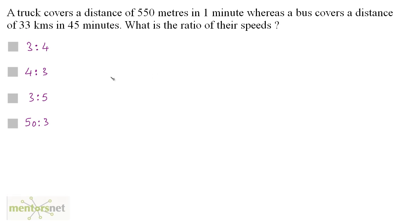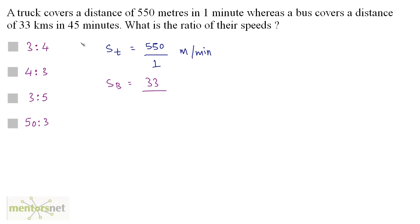A truck covers a distance of 550 meters in 1 minute whereas a bus covers a distance of 33 kilometers in 45 minutes. What is the ratio of their speeds? The speed of the truck is 550 by 1, which is 550 meters per minute. The speed of the bus is 33 by 45 kilometers per minute. To take the ratio, we need the same units, so let us convert to meters per minute: 33 kilometers is 33,000 meters by 45 minutes.